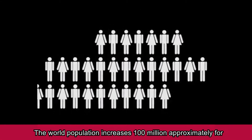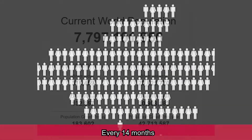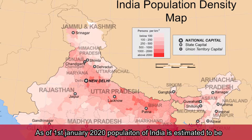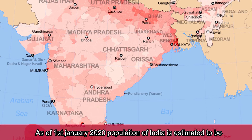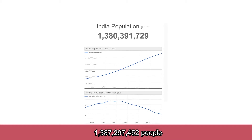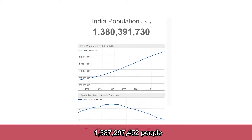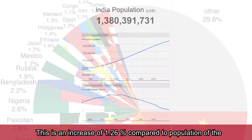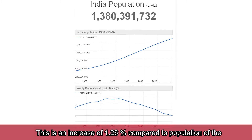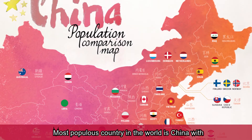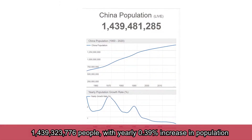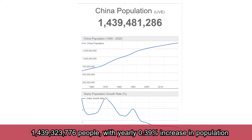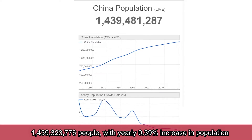The world population increases approximately 100 million for every 14 months. The current world population is 7.8 billion as of 2020. As of 1st January 2020, the population of India was estimated to be 1,387,297,452 people, which is 17.7% of world population. This is an increase of 1.26% compared to the population of the previous year. The most populous country in the world is China with 1,439,323,776 people, with nearly 0.39% increase in population.